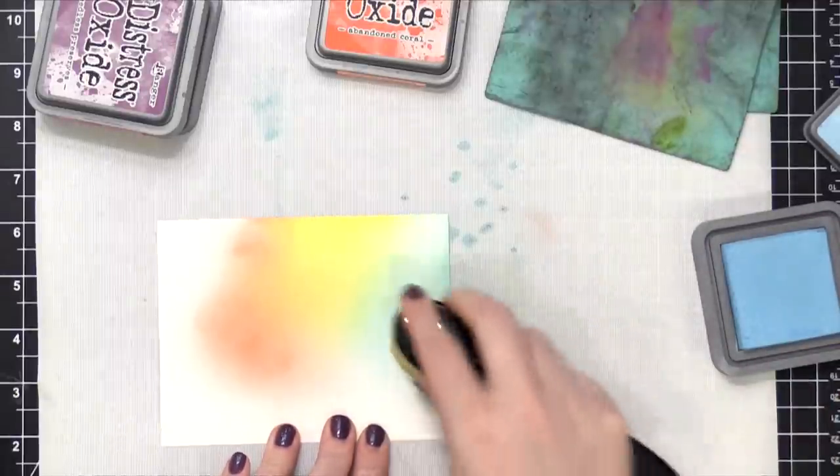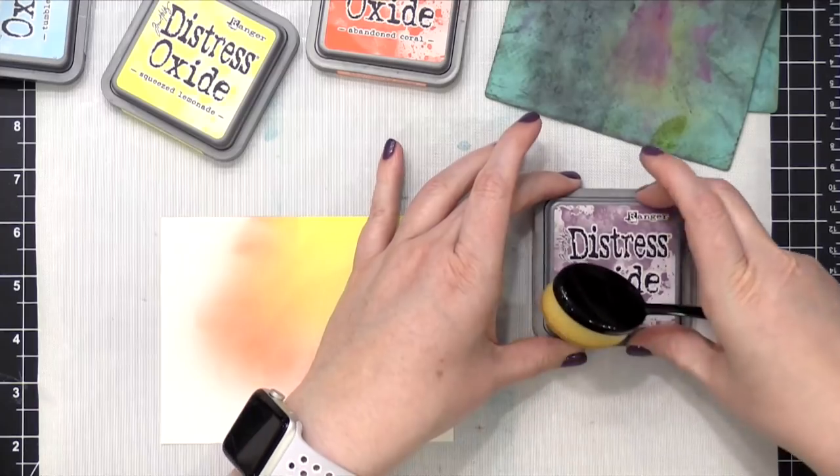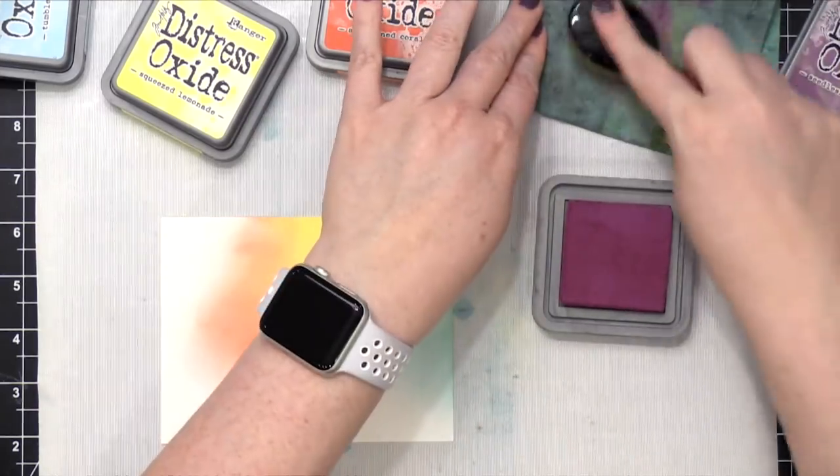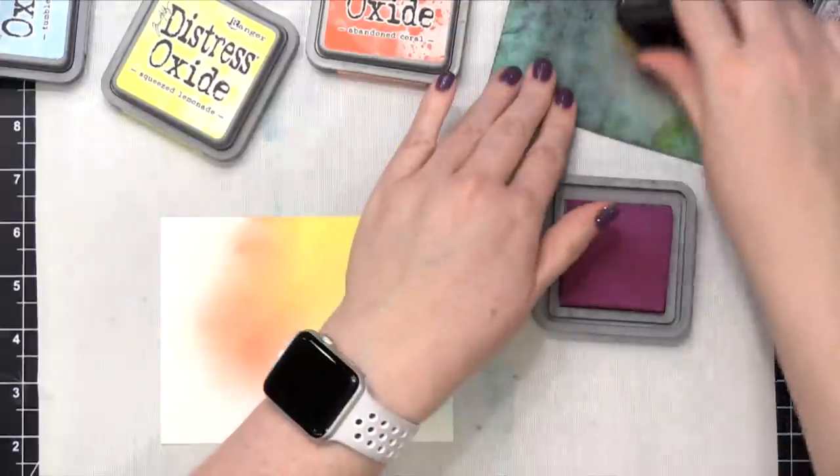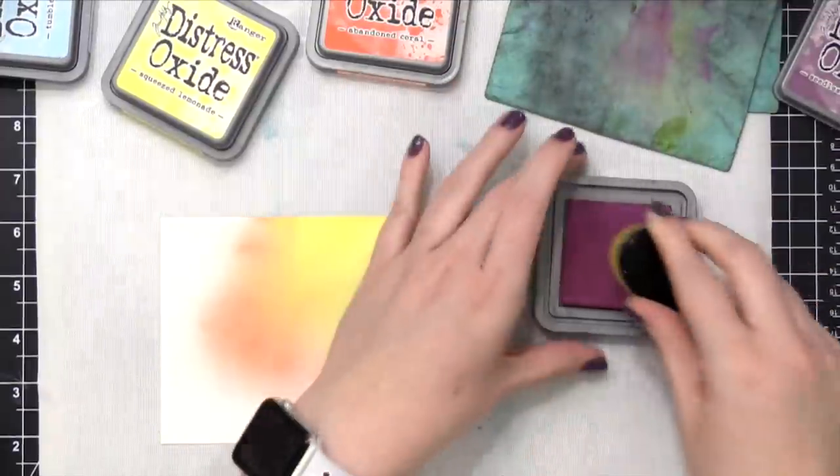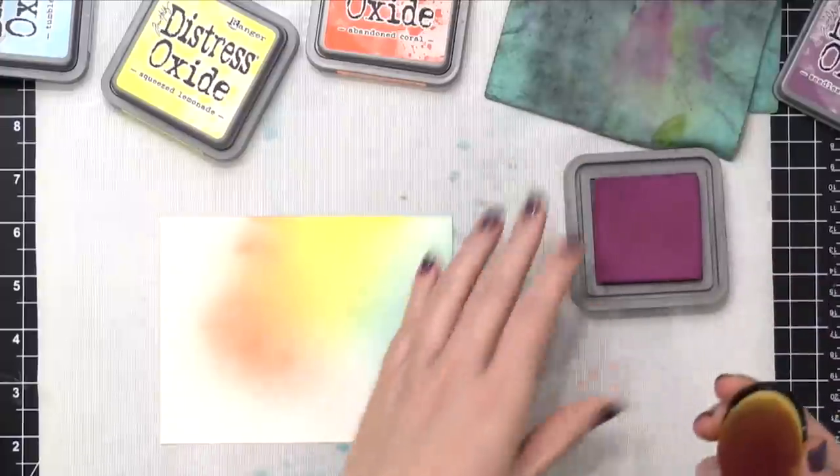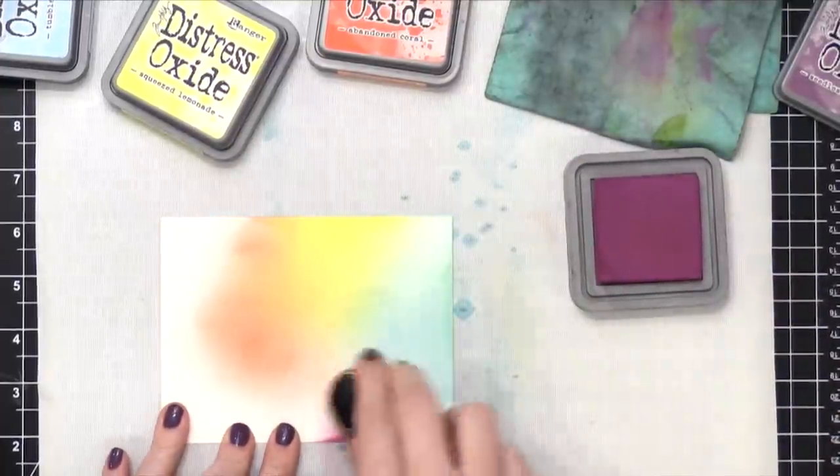This is the last color. And I really think this Seedless Preserves ink pad is pretty juicy because I didn't feel like I swirled the blending brush on this ink pad a ton. I thought it was just about as much as I had the other ones.